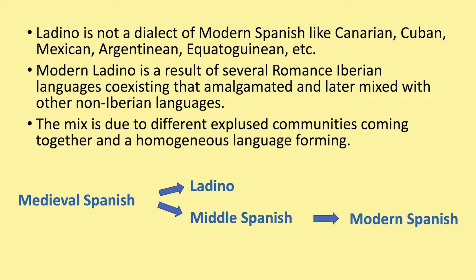The mix is due to different exposed communities coming together and a homogeneous language forming. As you can see, Ladino didn't come from modern Spanish — the language diverged after Medieval Spanish during the Middle Spanish period. Ladino did continue to evolve just like modern Spanish did.